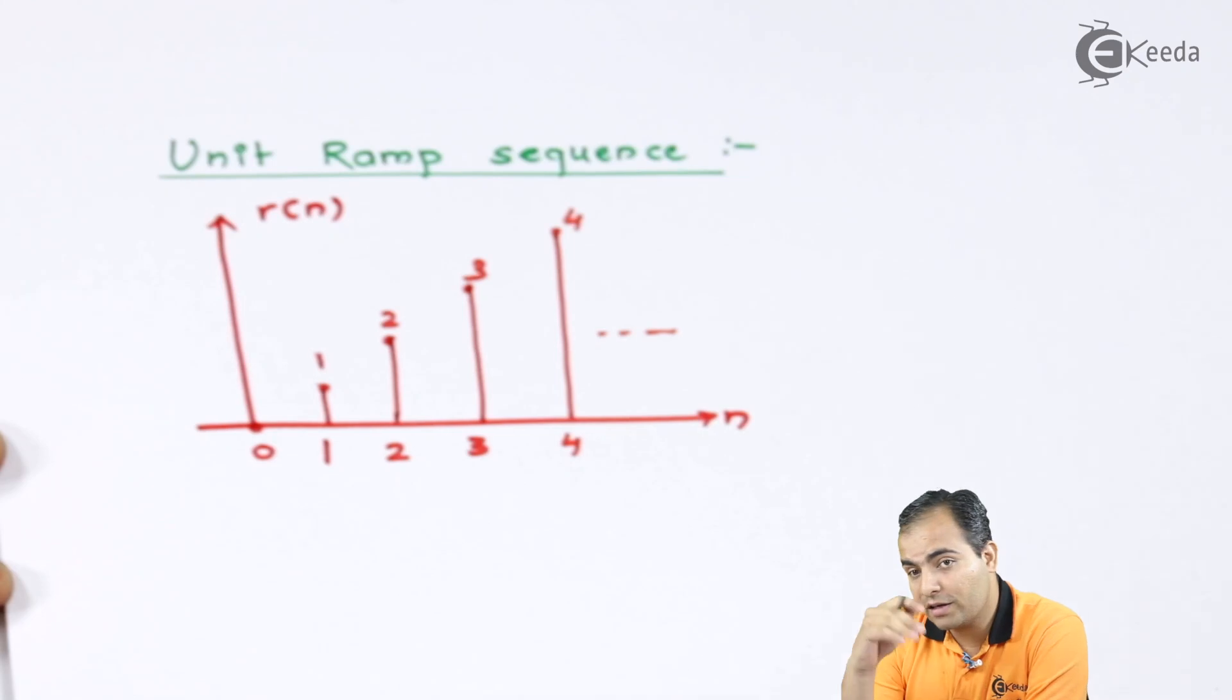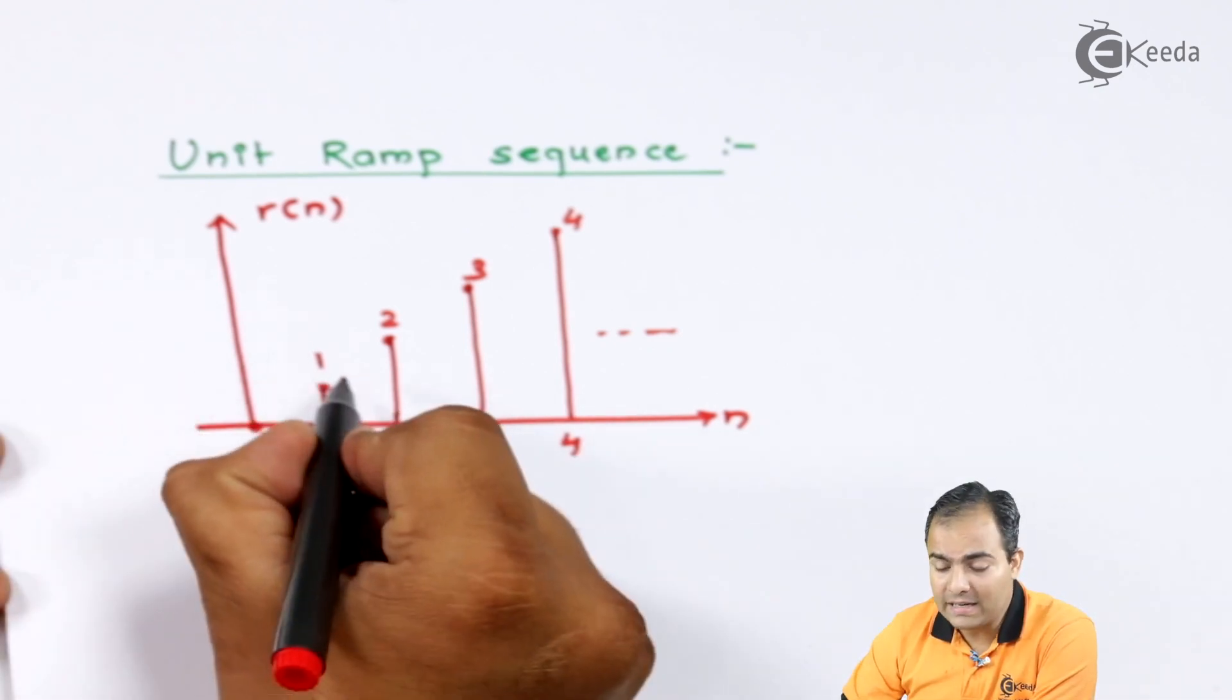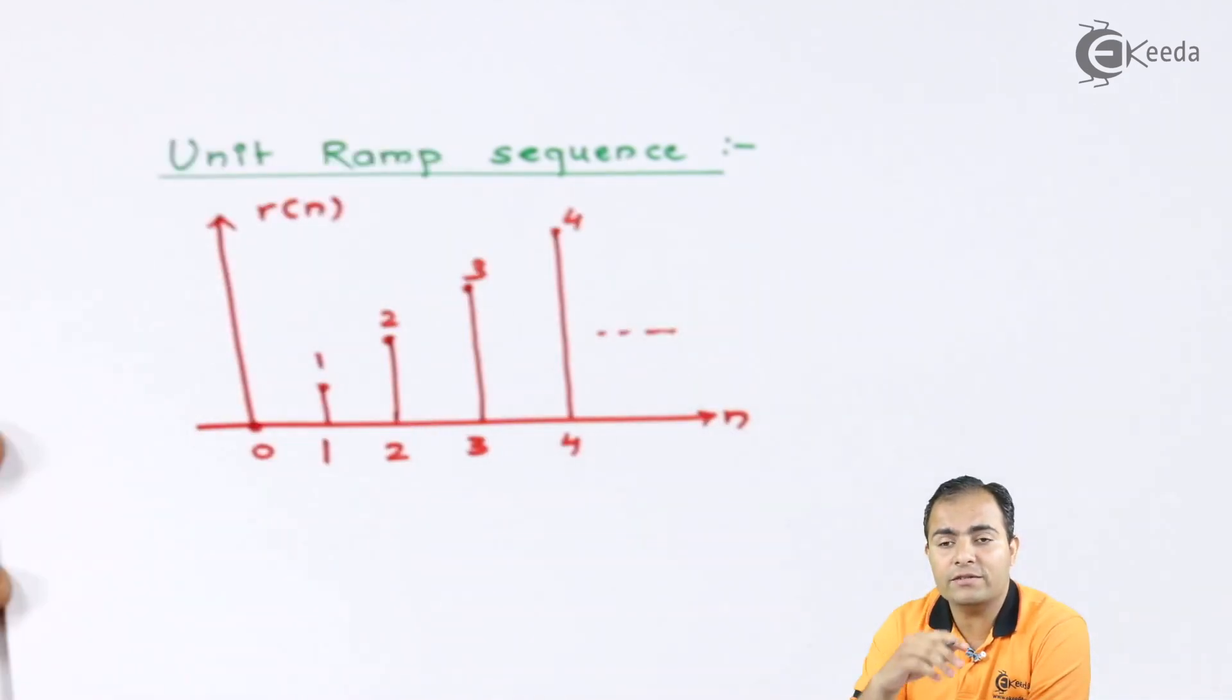And this will go on increasing. For n equals 5, amplitude is also 5. For n equals 6, amplitude is 6. You can see, just look here, this amplitude increased by 1, 1, 1, 1, which means the slope of this ramp is 1.